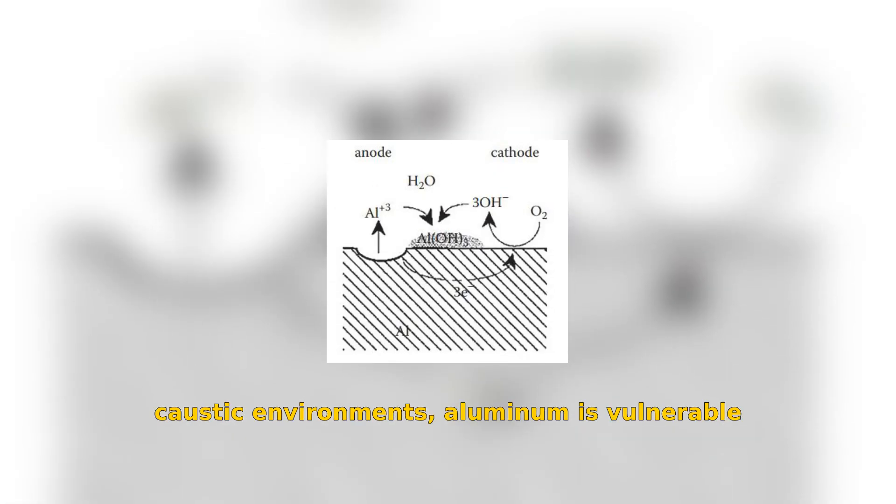However, in acidic or caustic environments, aluminum is vulnerable to corrosion. This process is an electrochemical reaction, where electrons transfer from the anode, where aluminum dissolves, to the cathode where the electrons are consumed.